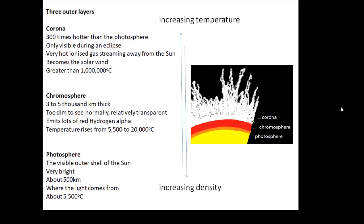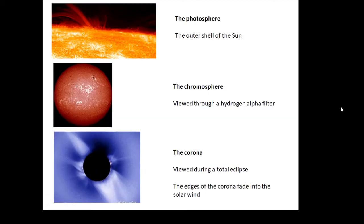Remember: corona on the outside, then the chromosphere, then the photosphere. Here are some NASA pictures - the photosphere, the outer shell of the Sun; the chromosphere viewed through a hydrogen alpha filter; and the corona, taken during a solar eclipse, where the edges fade into the solar wind.